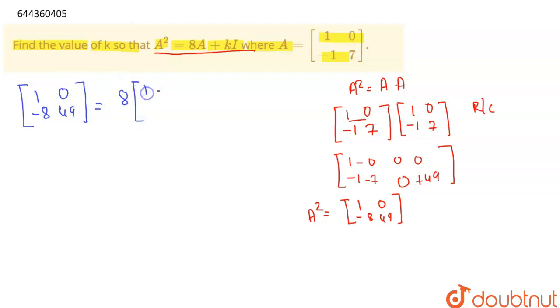What is our A? Our A is [1, 0, -1, 7] plus we don't know about k, and what is the identity matrix? The diagonal would be 1, so this would be [1, 0, 0, 1].